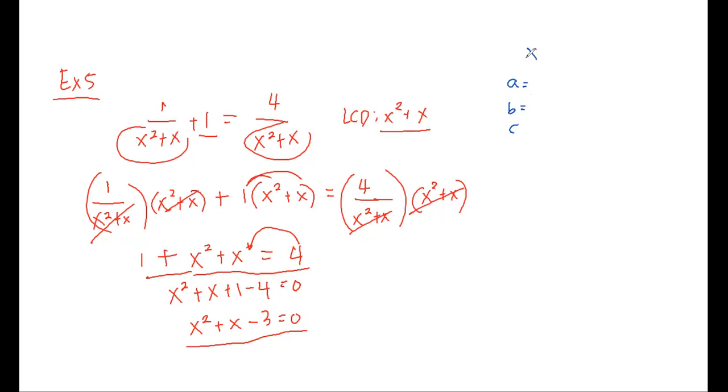Based on x squared plus x minus 3 equals 0, our a is 1, our b is 1, our c is negative 3.